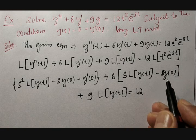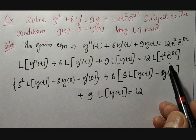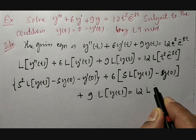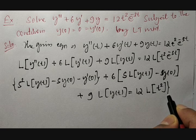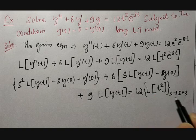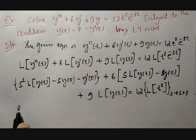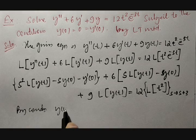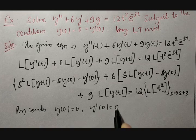Here we need to utilize our basic knowledge of Laplace transformation. I would like to use the first shifting property, which says L{t²} where s is going to be replaced by s + 3. By the given conditions, y(0) = 0 and y'(0) = 0.